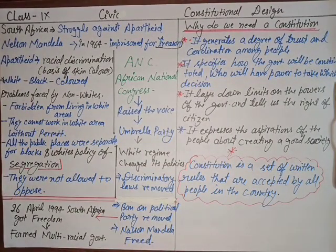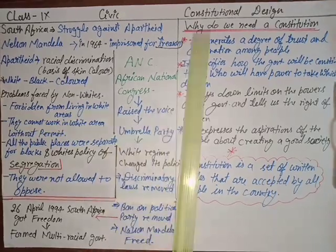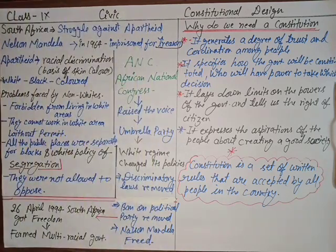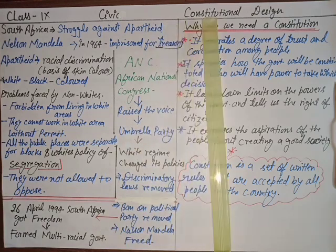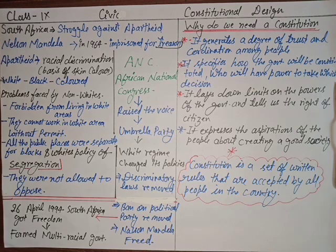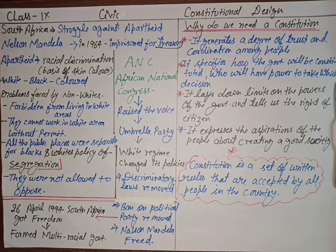Hello students, good morning, good afternoon, good evening. This is your social science teacher and today we are going to cover the next chapter, Constitutional Design, from the civics book for class ninth. In this chapter we are going to study about the constitution — our Indian constitution — how it was formed, what it is, why we need it. We will study this whole concept along with some examples, starting with the example of South Africa.